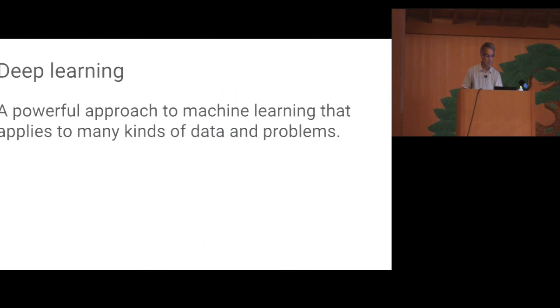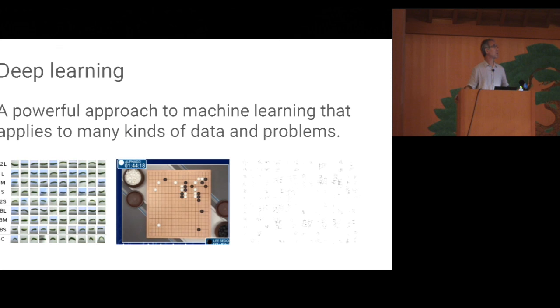So, as I said, deep learning is a particular kind of machine learning. It's a very powerful approach that applies to many kinds of data, speech, text, images, and more, and many kinds of problems. As an illustration of this point, the images on this slide correspond to three applications of deep learning, by no means the only ones, and perhaps not the most important ones. The one on the left is for a classification task to which I'll return later in the talk. It is the task of classifying cucumbers according to their shape and color, among other attributes.